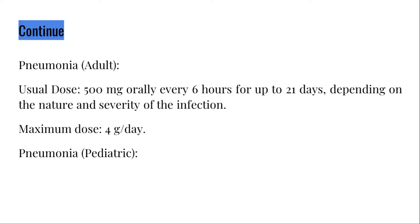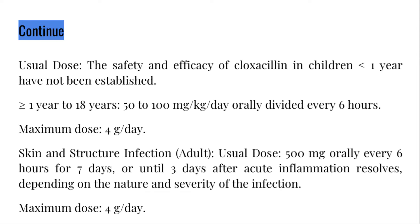Maximum dose: four grams per day. Pneumonia, pediatric: usual dose — the safety and efficacy of cloxicillin in children less than one year have not been established. For one year to 18 years: 50 to 100 milligrams per kilogram per day orally, divided every six hours. Maximum dose: four grams per day.